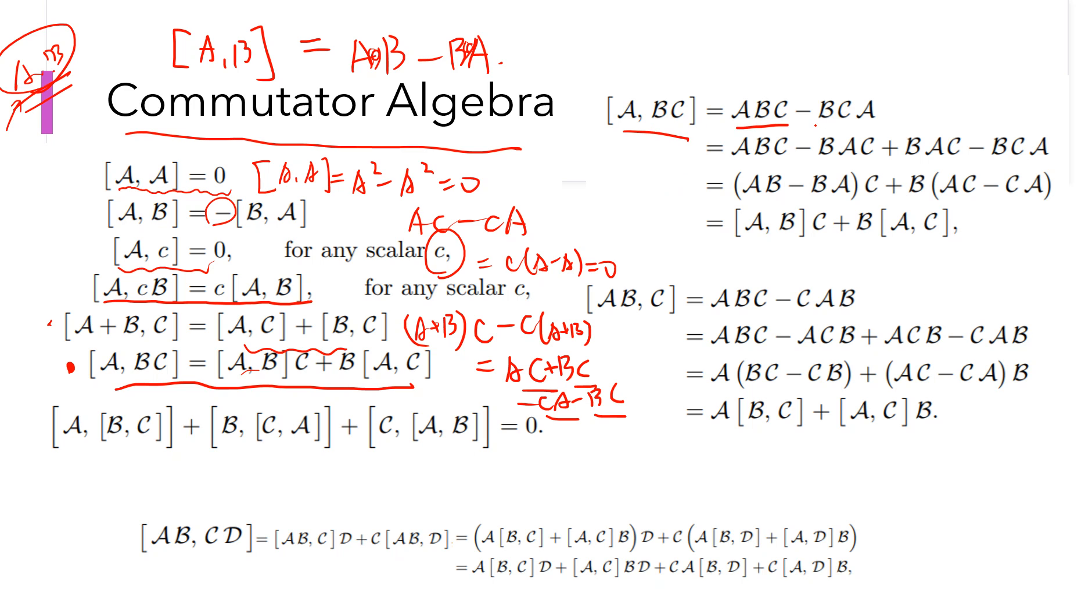So [A, BC] by definition is A BC minus BC A. And then you add B A C here. Okay, and you can pull out this C, so it becomes this. And then pull out the B, becomes this. Okay, and this is [A, B], this is [A, C].